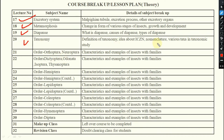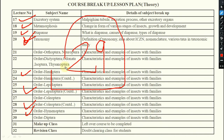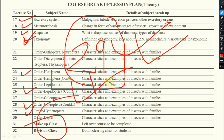For taxonomy, we will cover the definition of taxonomy, an introduction to ICZN, nomenclature, various taxa, and taxonomic position. Then we will discuss the different insect orders — Orthoptera, Neuroptera, Dictyoptera, Odonata, Isoptera, Hemiptera, Lepidoptera, Coleoptera, and others — all 29 orders one by one, along with their important families. Revision classes will also be provided for this course.